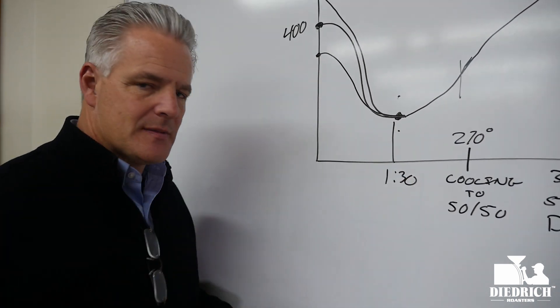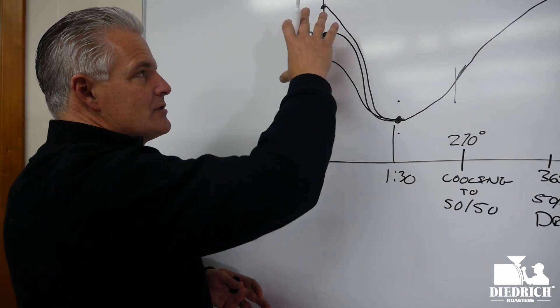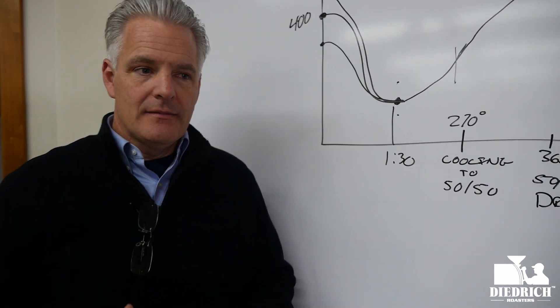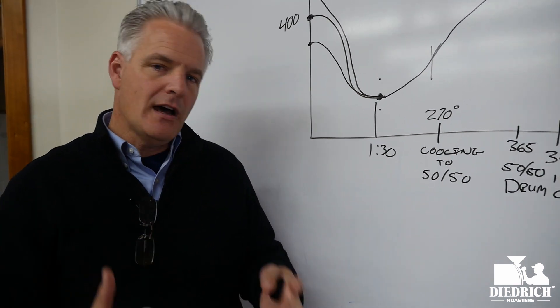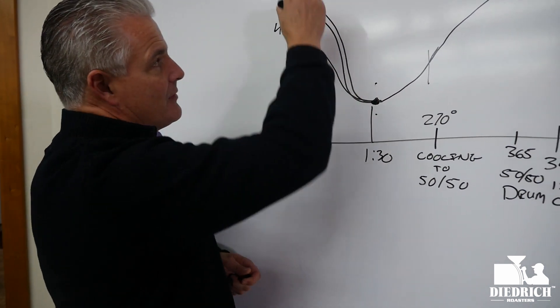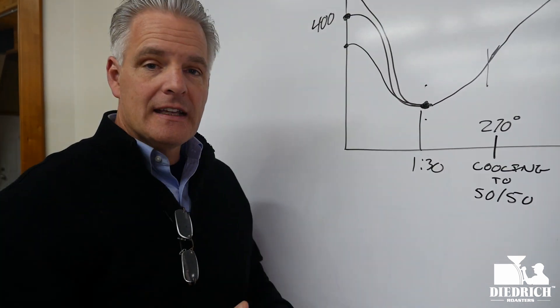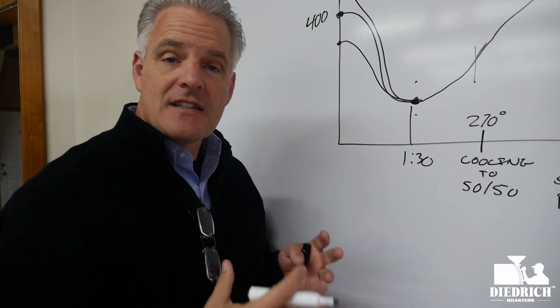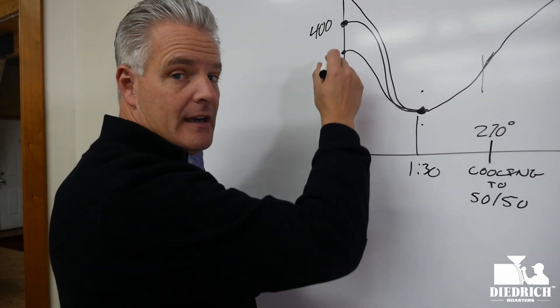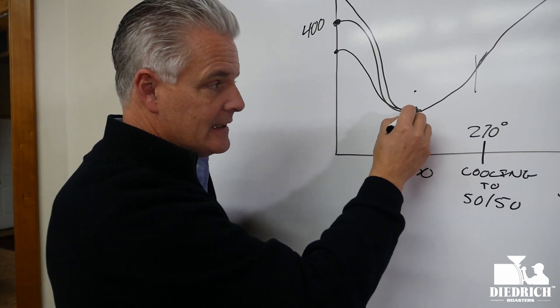So use charge temperature as a way to throttle, if you will, getting to here. This is your goal. This to me in profiling, the number is not the important thing to match every single time. The number there is for the purpose of getting to here.